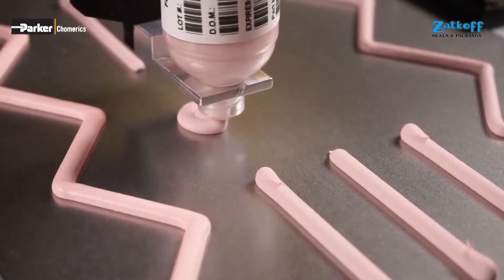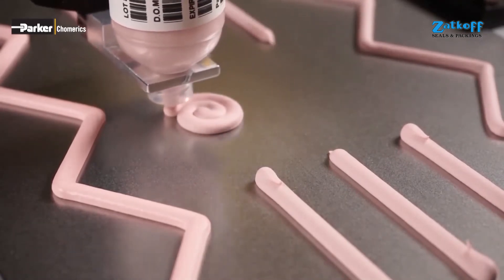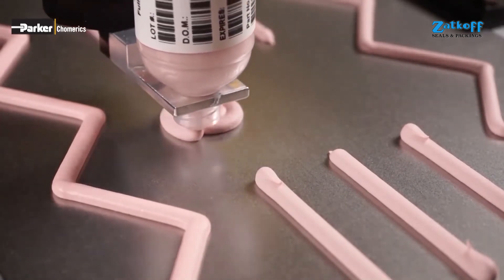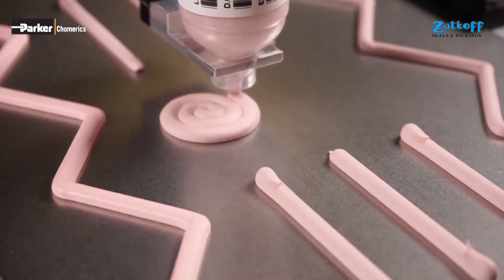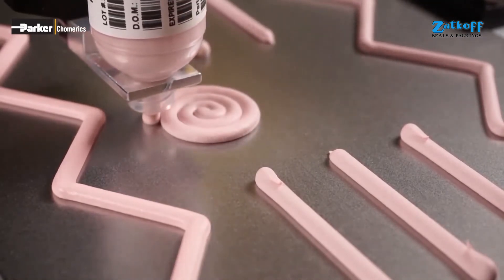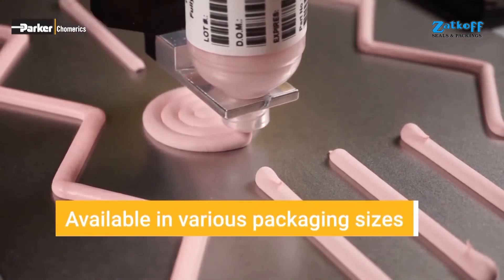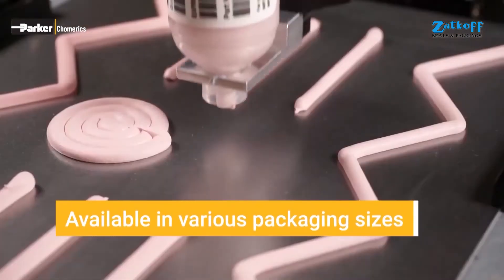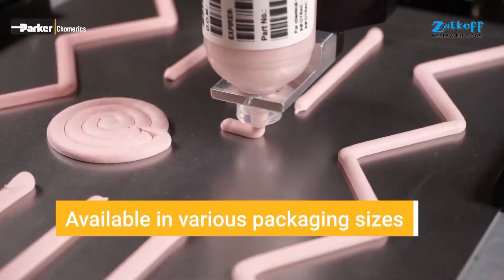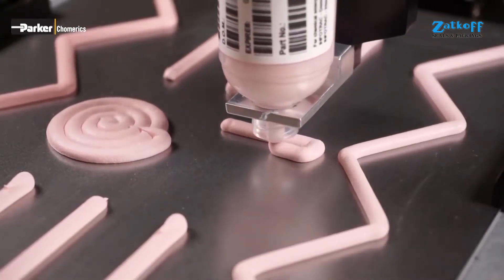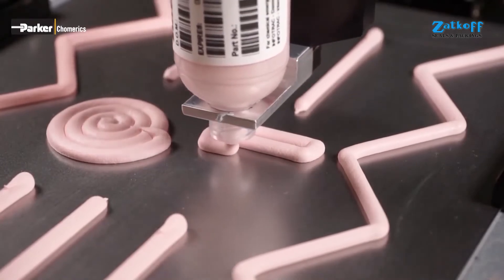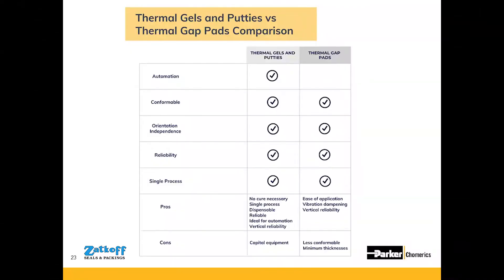Here is a video showing Gel 30 being dispensed in a variety of different patterns. This is one of the most popular products Comerics offers and has been used in the market for over 10 years. Gap pads and gels share many similarities like conformability, orientation independence, and product reliability supported by years of material development and testing.